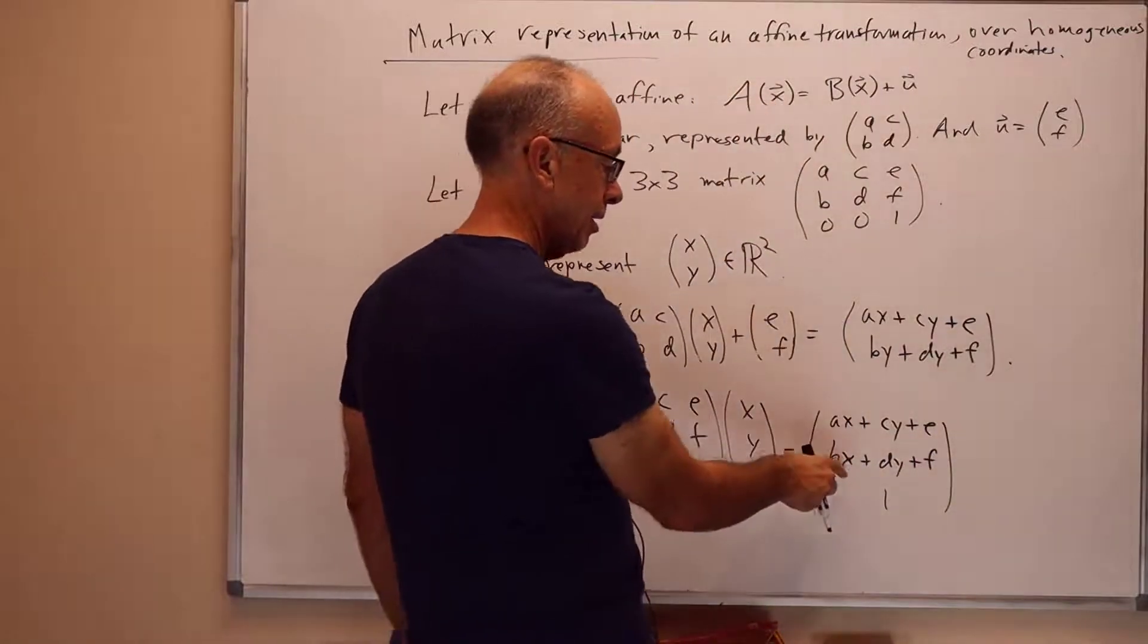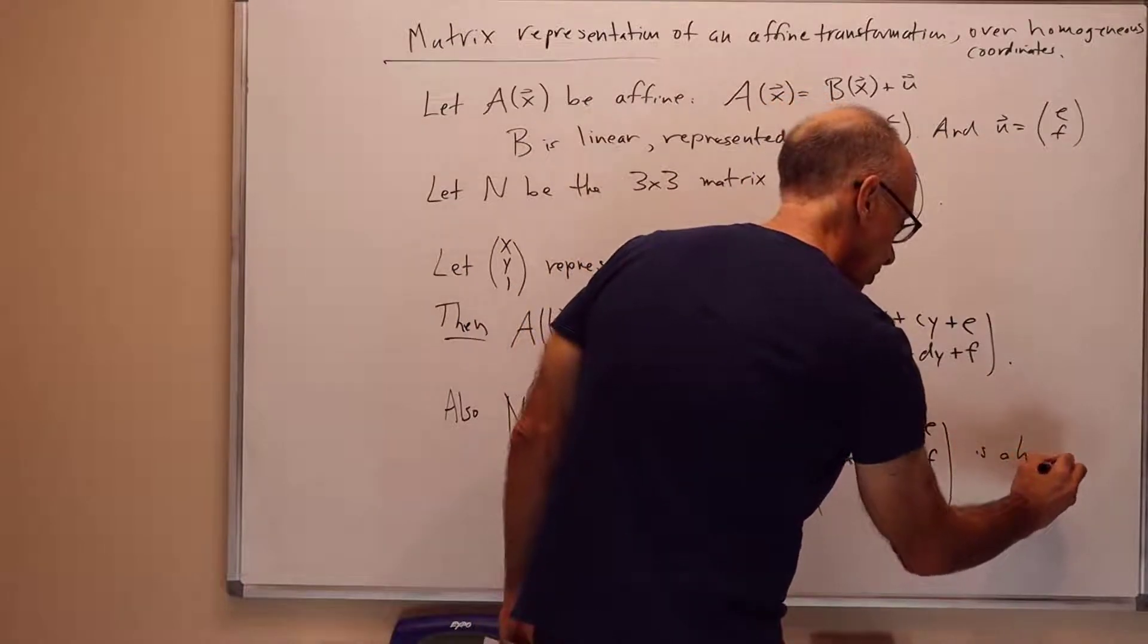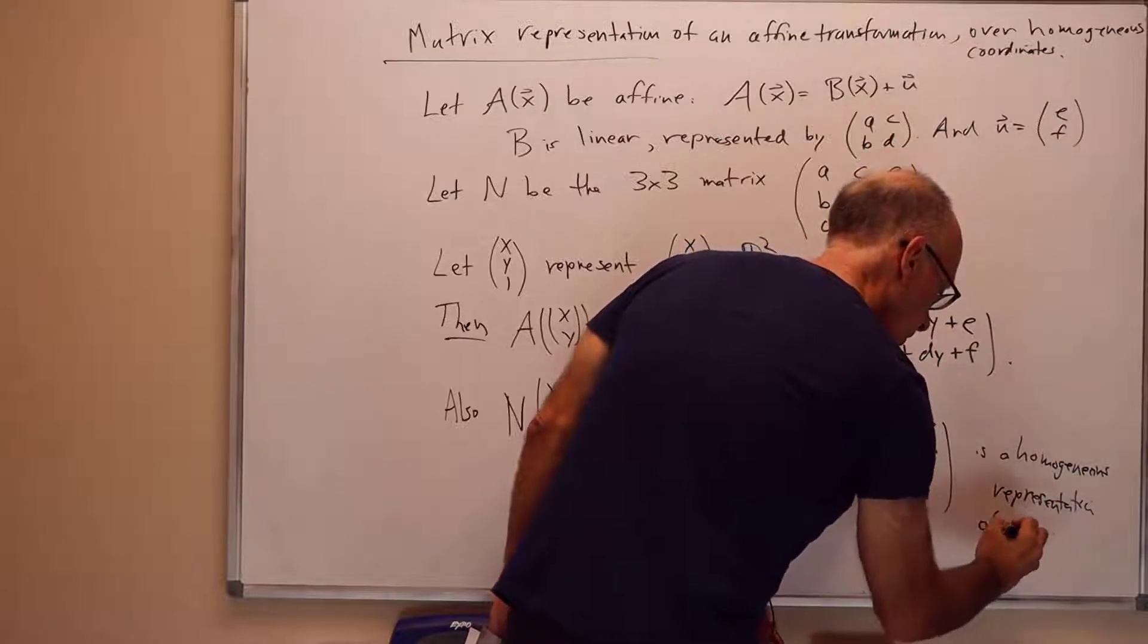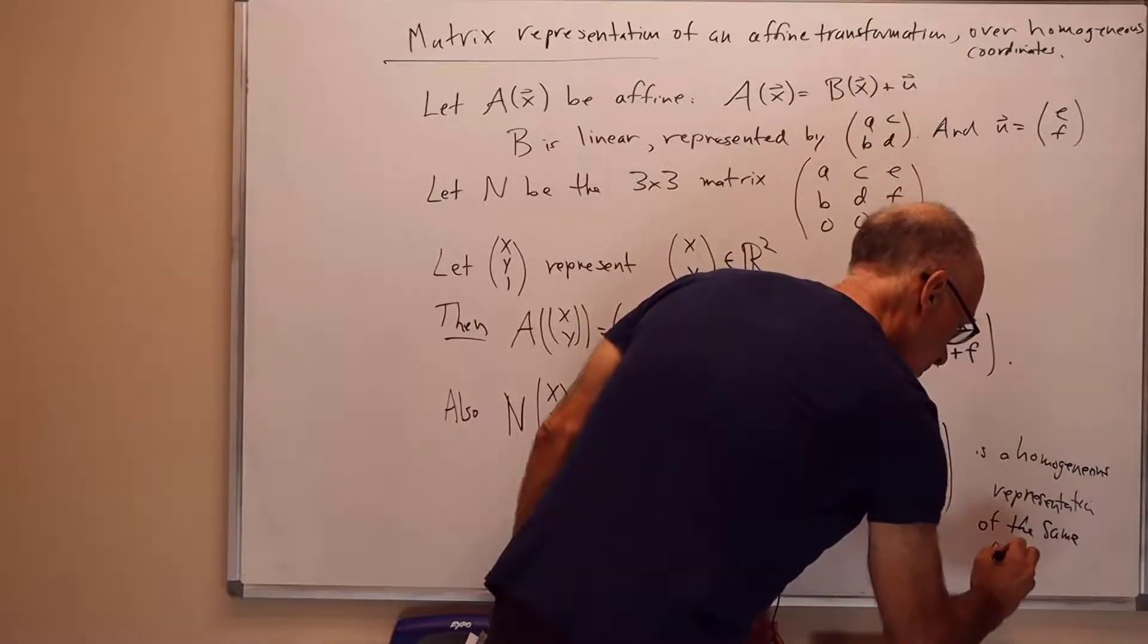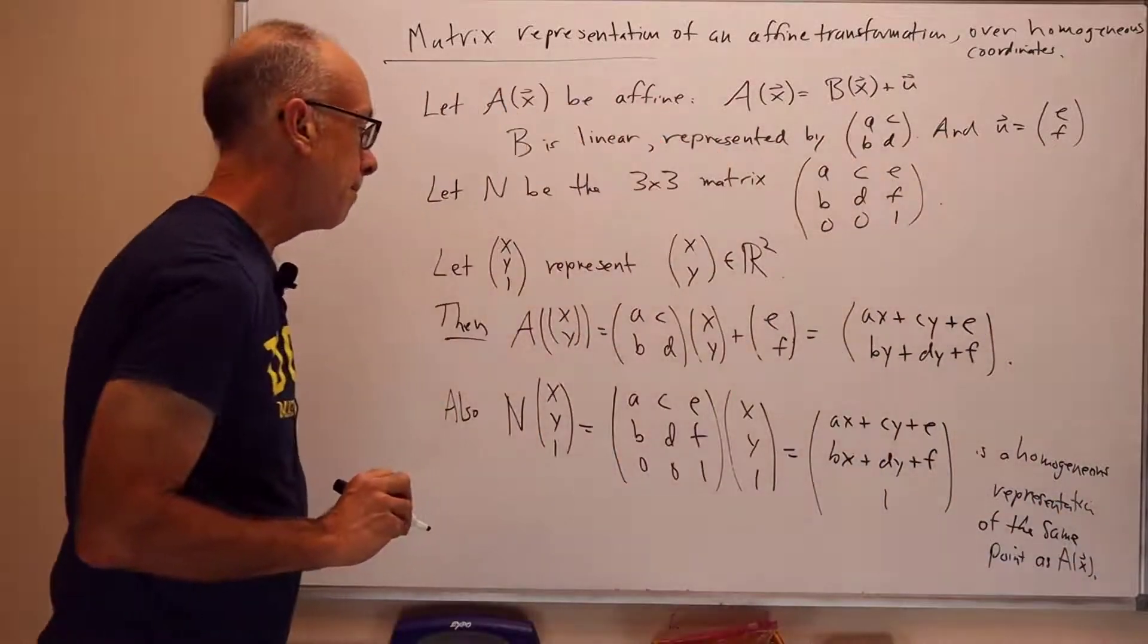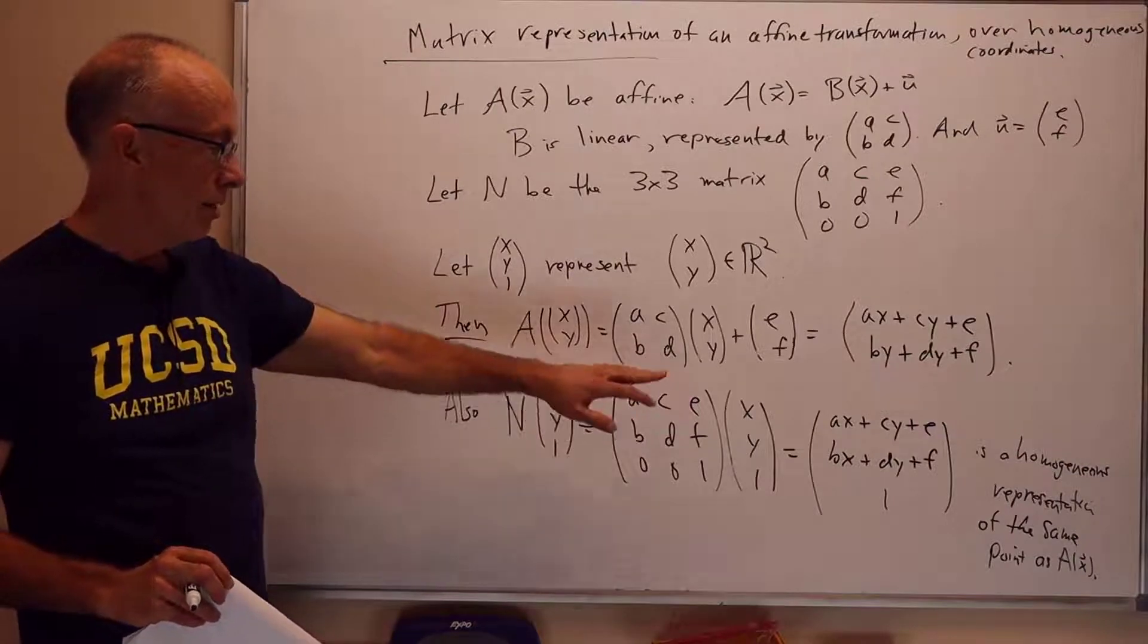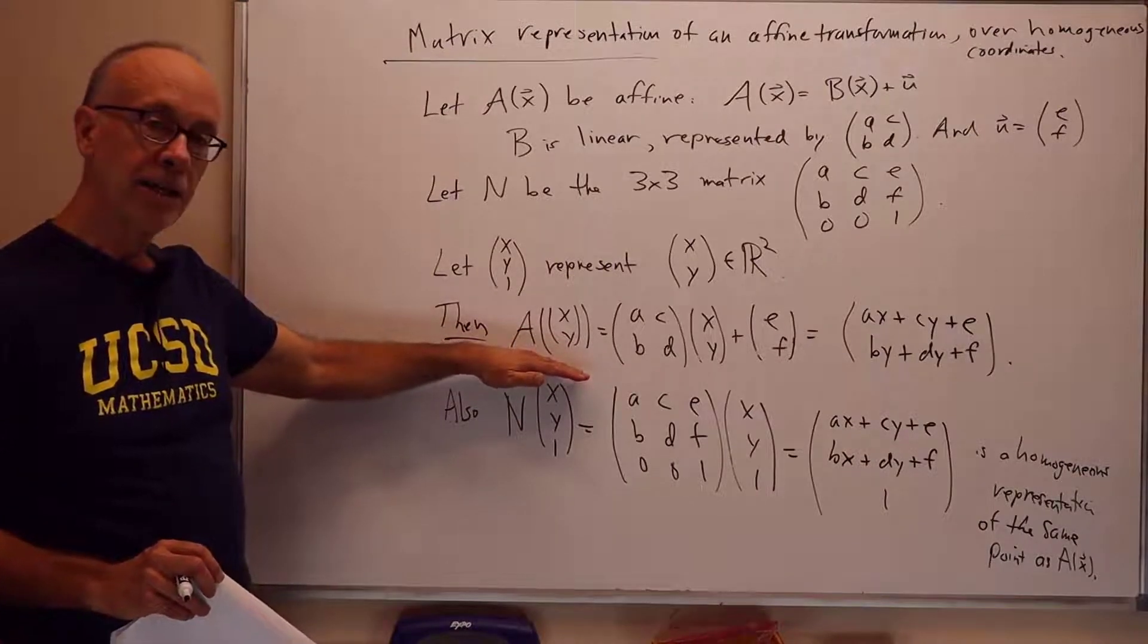And the inner product of the column vector of the third row is 0x, 0y plus 1 times 1, which is 1. And this is a homogeneous representation of the same point. And so this is a homogeneous representation or a set of homogeneous coordinates of the same point as A, x. So in this way, the matrix N, when operating on homogeneous coordinates x, y, 1, gives you the same value, a representation for the correct point that A maps x, y to.